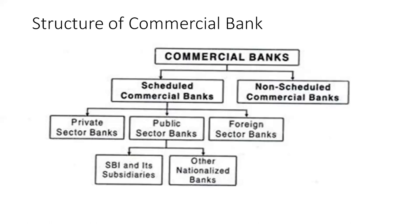Scheduled commercial banks are classified into three categories: private sector banks, public sector banks, and foreign banks. A private sector bank is one where investment is not made by the government — investment is made by the general public or outsiders. Public sector banks are those where the government invests more than 50% of the total capital and becomes the manager of that particular bank. These are called public sector banks.